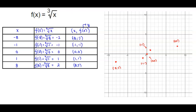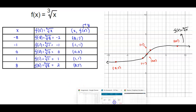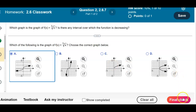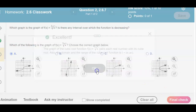Now we're going to connect these dots, showing the cube root function of x. So here is our graph, which represents the cube root of x. Looking at the answer choices A, B, C, and D, we have A as the answer according to our graph. Let's check our result — and there it is.